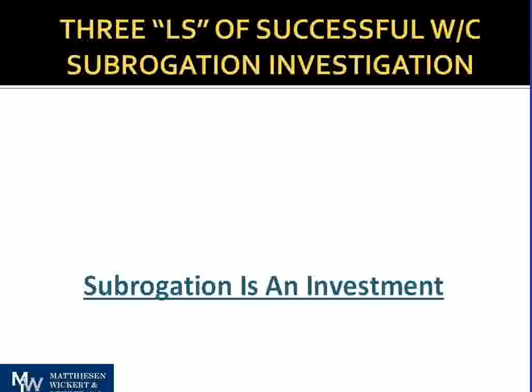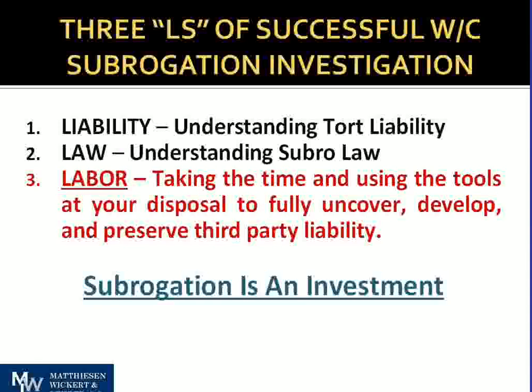Successful workers' compensation subrogation involves three things — I call them the three L's. Number one is liability. You have to understand tort liability. If you don't understand that you have an opportunity to pursue a vehicle manufacturer in a single-car accident, or that there's tort liability associated with a retread tire on a tractor-trailer that caused a collision, understanding the potential for third-party liability — becoming a kind of law student — is actually a key part of successful subrogation investigation. It's often one of the more difficult elements, and that's where education comes into play.